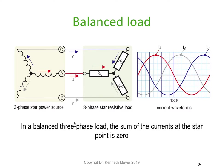Let's look at a balanced load to start with. On the left-hand side we have a star-connected generator, and on the right-hand side a three-phase star resistive load — three resistors connected in star. A-phase is the reference; B-phase is 120 degrees behind, and C-phase is 240 degrees behind, or 120 degrees behind B. In a balanced three-phase load, the sum of the currents at the star point is zero, so there's no connection needed between the two star points.